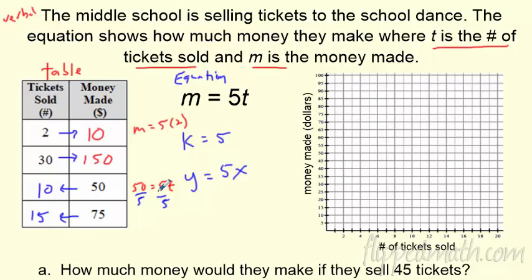So here's my table completed. You can use the equation to do it. You can use the idea that k is 5 and do it. I'm cool either way, as long as you can make the connection to the graph over here. So now we're going to graph it. Remember, these are all just points. 2 makes 10. So if I come over here, 2 tickets means $10. So put that dot on there. There's the point 2 makes 10.